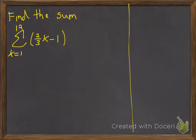Alright, in this video we're going to look at one of the examples we worked through in class, and this was to find the sum k equals 1 to 12 of 2/3 k minus 1.